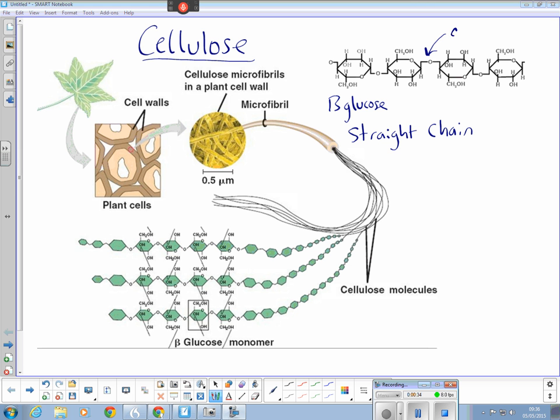We can see one right here. It's a 1,4 glycosidic bond because the carbons involved are carbon one on one beta glucose and carbon four on another.